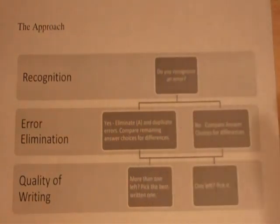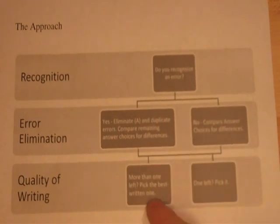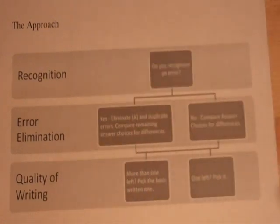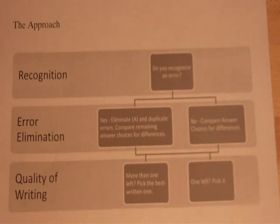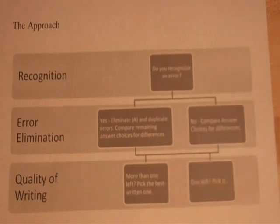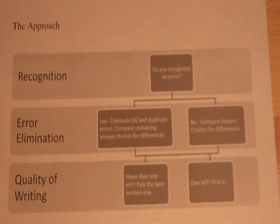If you don't see an error, go straight to comparing the answer choices to each other and look for differences. Here's a big difference between error ID and improving sentences: once you've eliminated answer choices, sometimes more than one remains, and all remaining choices are grammatically correct. In that case, you worry about quality of writing — you pick the one that's better written.